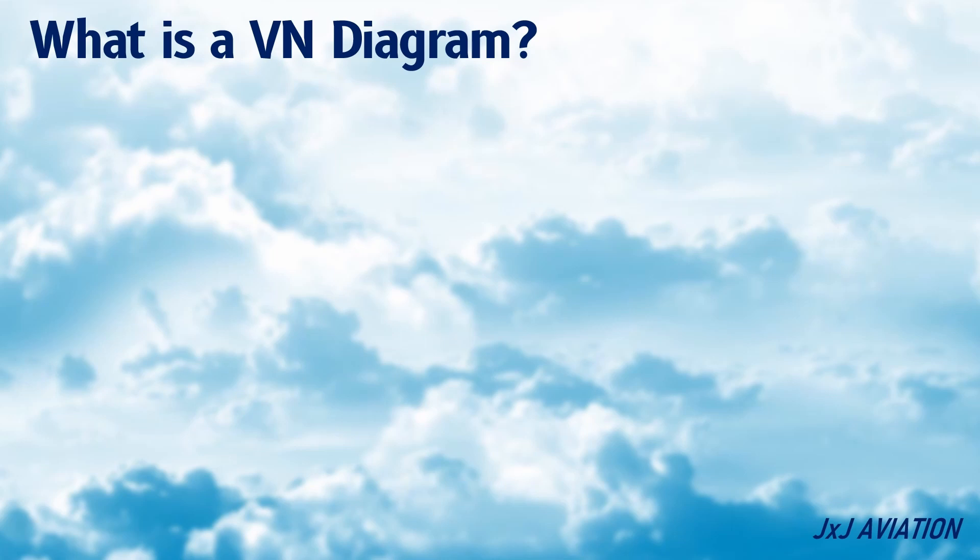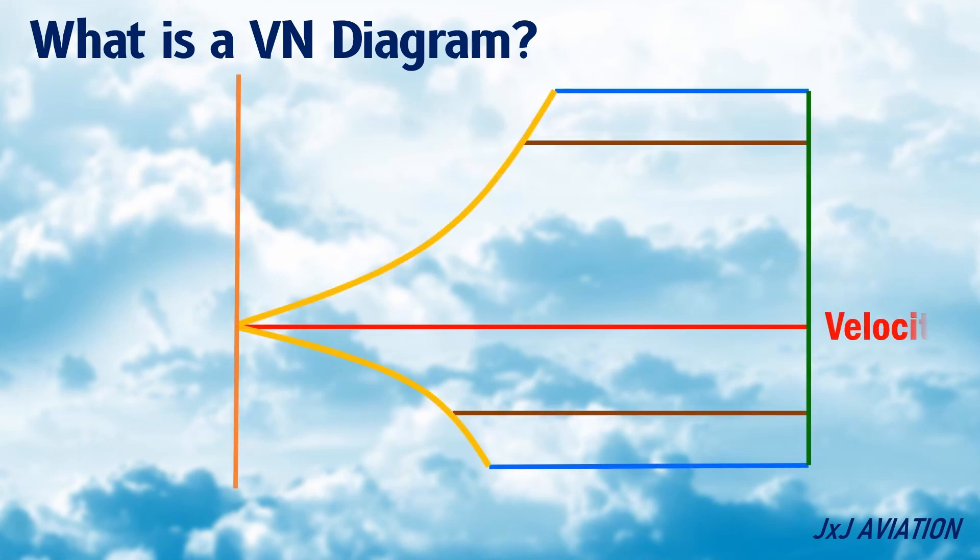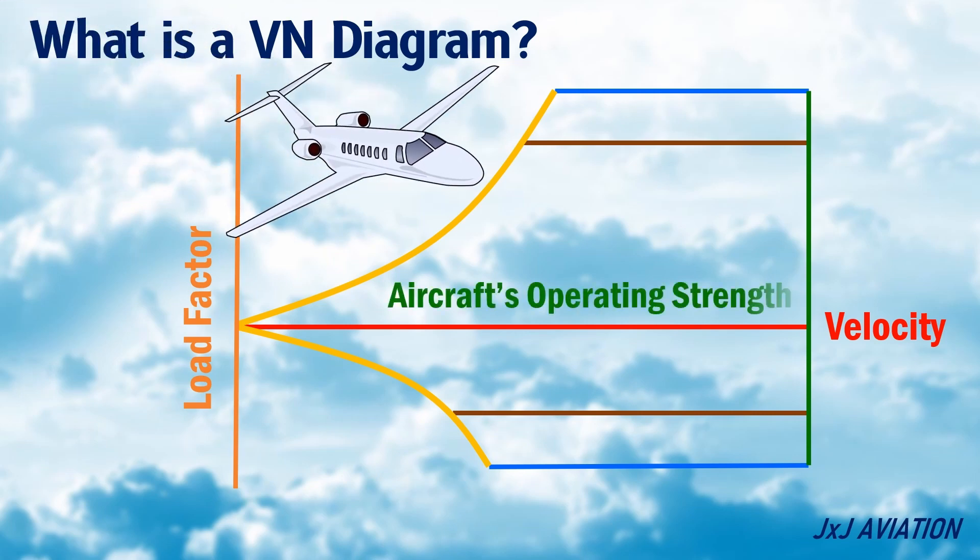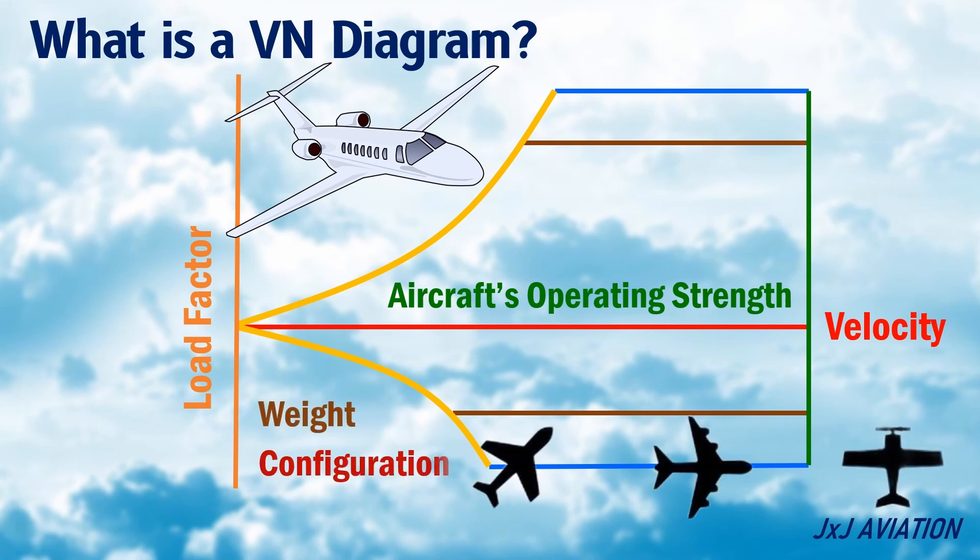What is a VN diagram? A VN diagram is a graph between velocity and load factor. This graph has velocity on the X axis and load factor on the Y axis and gives details about an aircraft's operating strength. Each aircraft has its own VN diagram for a certain weight, configuration, and altitude.